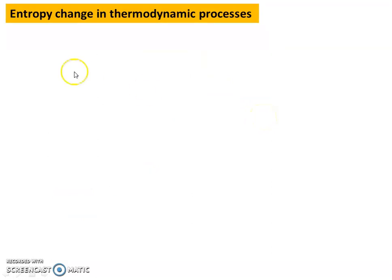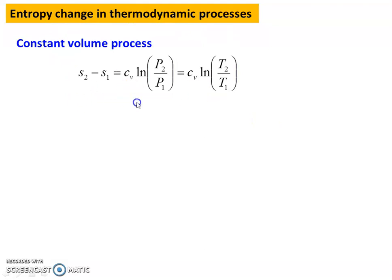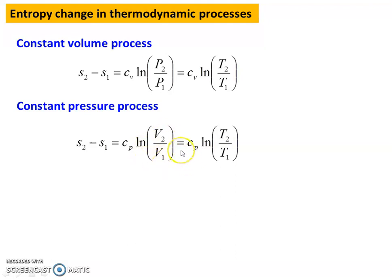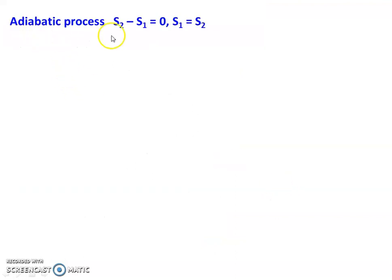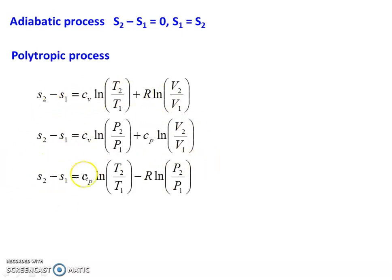Entropy for specific thermodynamic processes: Constant Volume Process — volume is constant, so s2 - s1 = Cv ln(T2/T1). Constant Pressure Process — s2 - s1 = Cp ln(V2/V1) = Cp ln(T2/T1). Constant Temperature Process — s2 - s1 = R ln(p1/p2) = R ln(V2/V1). Adiabatic Process — s2 - s1 = 0; there is no change in entropy; it is an isentropic process. For Polytropic Process, use any one of the three equations.